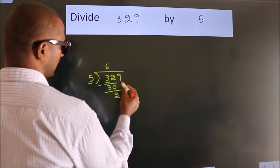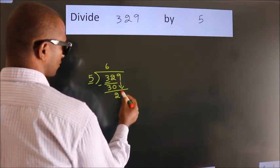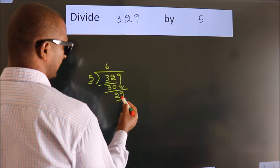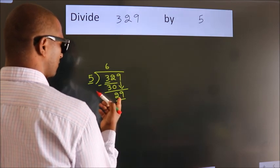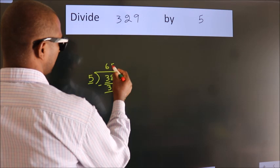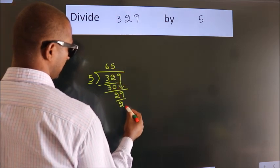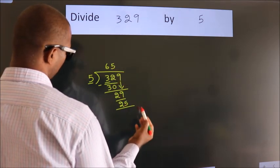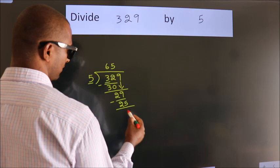After this, bring down the beside number. So 9 down, making 29. A number close to 29 in 5 table is 5, 5, 25. Now we subtract. We get 4.